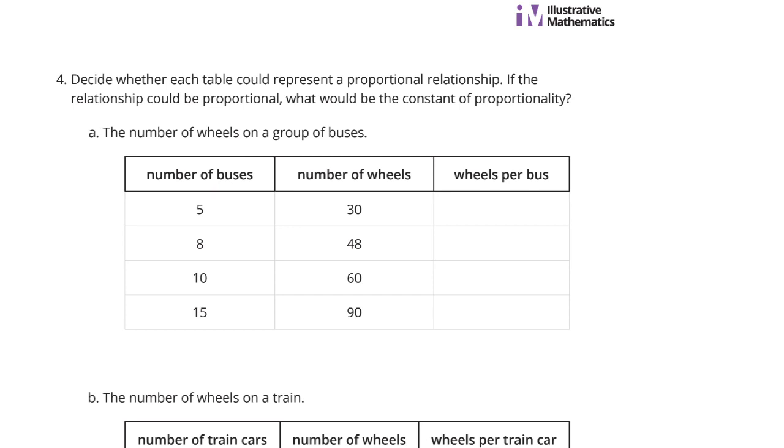Decide whether each table could represent in question 4 a proportional relationship. If the relationship could be proportional, what would be the constant of proportionality? This is a review question. Well, alright. 5 buses, number of wheels, 30. Wheels per bus. Divide 30 by 5, equals 6.